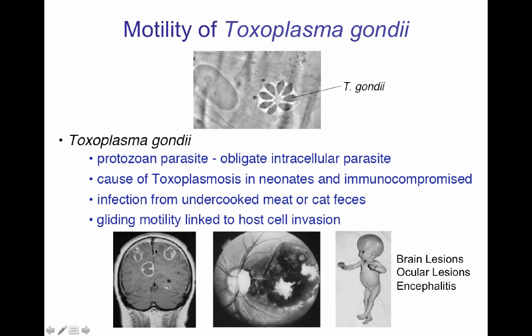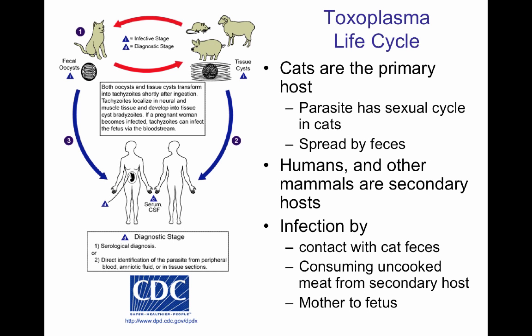It can also affect eyes and vision, shown here by this plaque. It is passed to the host by two different ways: undercooked meat and cat feces. It is an organism that moves without a flagellum, moving instead by gliding motility.